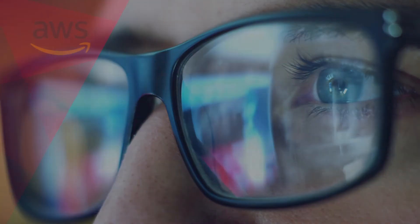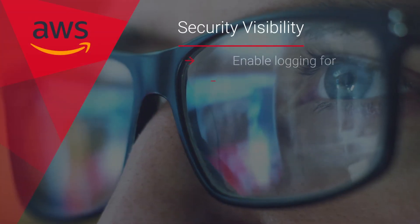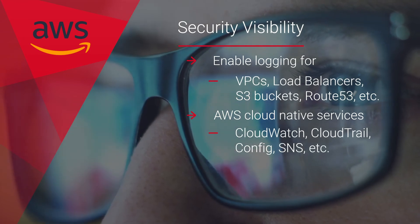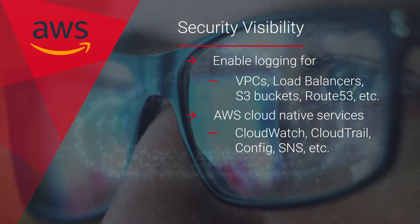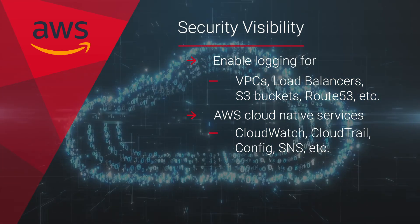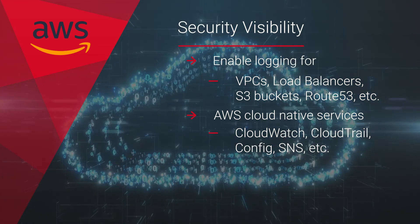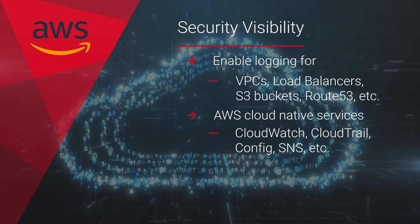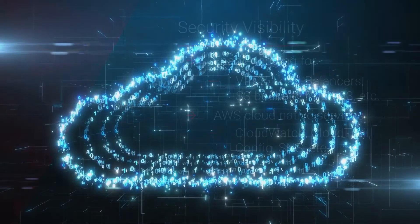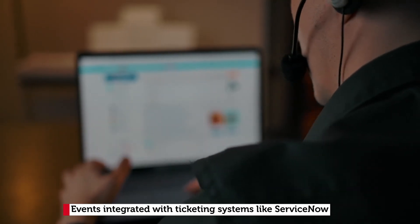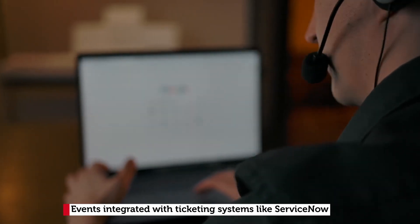As with other pillars, for security as well, we ensure visibility has been enabled. We check to make sure logging is enabled at the levels of VPCs, load balancers, S3 buckets, Route 53, RDS, etc., with proper configuration of AWS cloud native services such as CloudWatch, CloudTrail, Config, SNS, etc. And if applicable, that the events generated from these services are integrated with ticketing systems like ServiceNow.